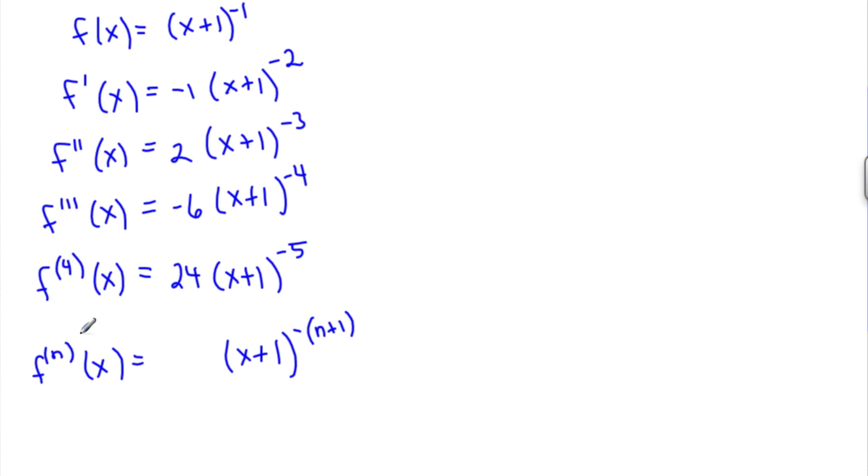So if I plug in a 6 here, 6 derivative, it should be to the minus 7. 6 plus 1, multiplied by a negative. That's the easy part. The second part that would be easy would be this alternating negative. It starts out as negative, positive, negative, positive. I can assume the next one would be negative when I bring down the 5, and the following one after that would be positive. So it alternates.